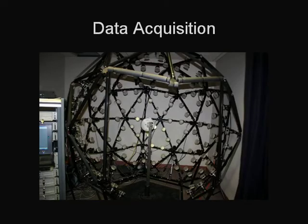For acquisition of time-varying appearance, we use a dome with 150 light sources and 16 cameras. The light sources can be turned on and off rapidly by computer control. This enables a complete acquisition of spatially varying appearance from one time step to be done in a few seconds.